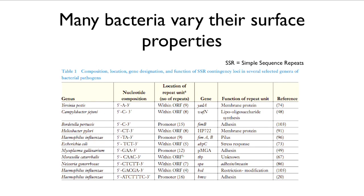Looking at bacteria, many vary their surface properties. Among those that do this are Yersinia pestis, which causes plague; Campylobacter, which causes very bad diarrhea; Helicobacter, which causes stomach ulcers and stomach cancer but may also be protective against autoimmune disease; E. coli, which normally lives in our gut; and Neisseria, which causes gonorrhea.